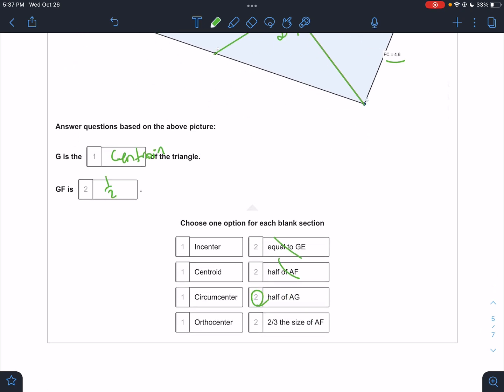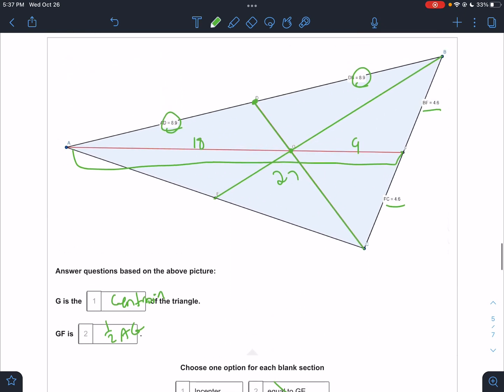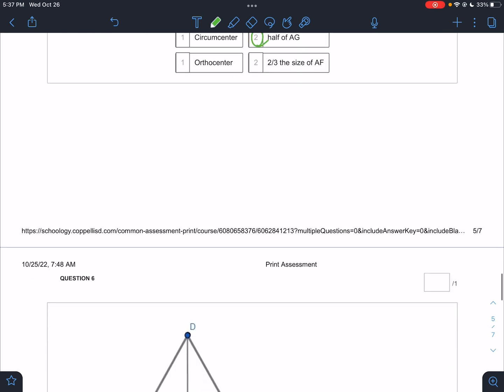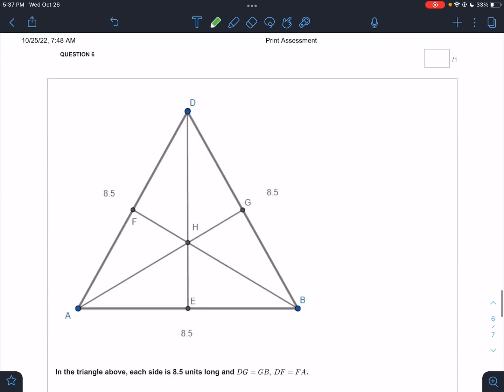That's the one. It is half of AG. Two-thirds of AF. Nope, this is the one that's two-thirds of AF. Next question.